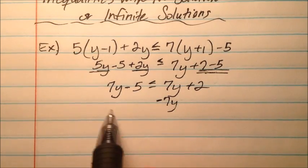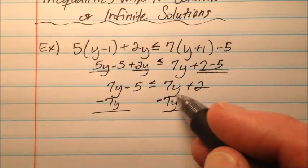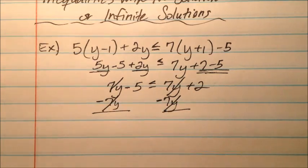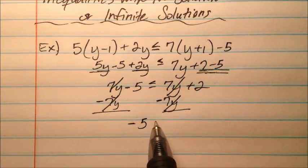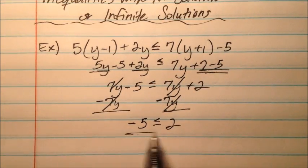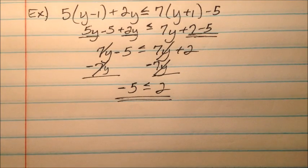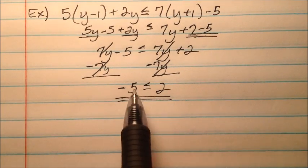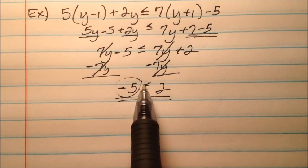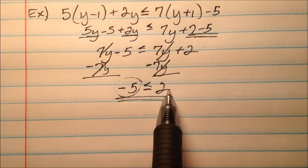OK, well, I noticed that I have 7y on both sides. So when I subtract 7y from both sides, I'll be left with negative 5 is less than or equal to 2. Well, gosh, there's no variables, so I don't have anything to solve for right here. But I do know that negative 5 is indeed less than 2.